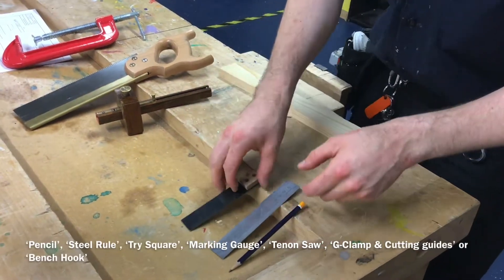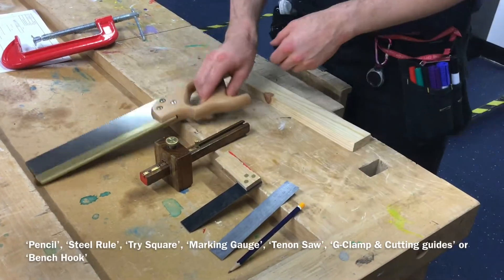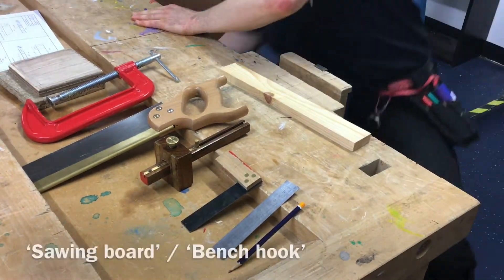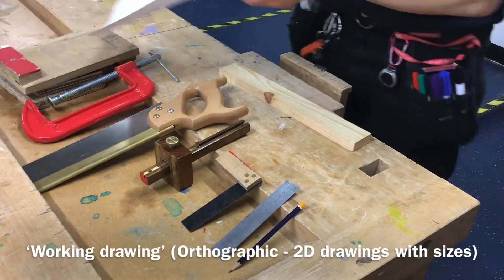What you're going to need: pencil, steel rail, tri-square, marking gauge, tenon saw, clamping blocks for cutting or sawing board, as well as your drawing.